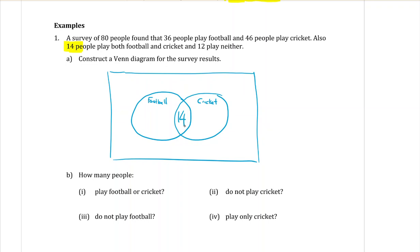So that now means that I can go back, and of the 36 people who played football, I need to subtract off the 14, because that's already been counted in my overlapping section. 36 take away 14 means that there's 22 people who only play football. Do the same thing for cricket. There are 46 people who play cricket.